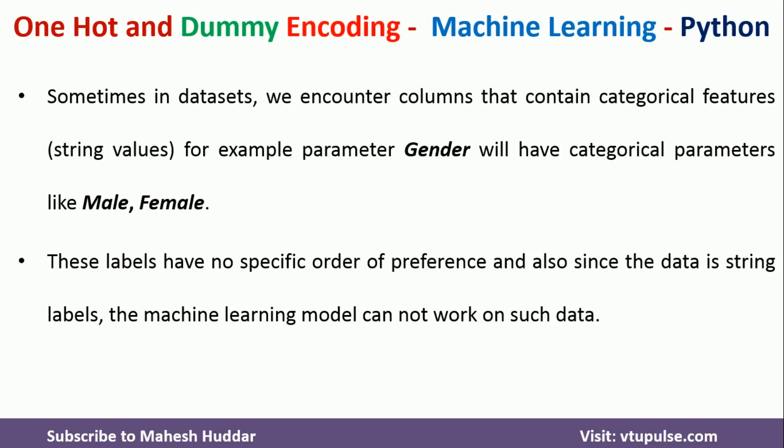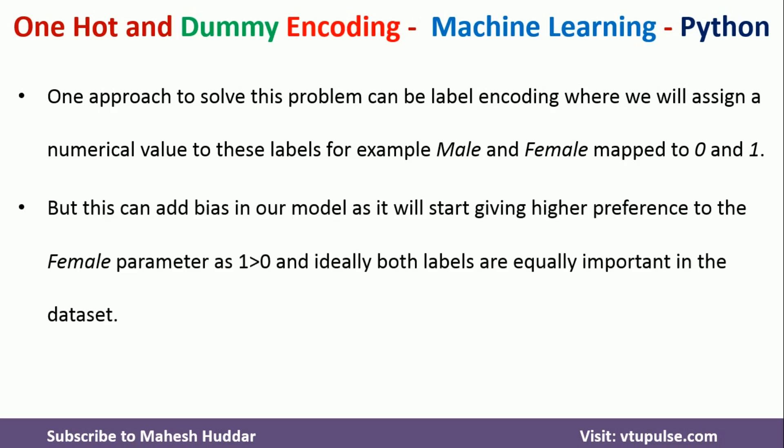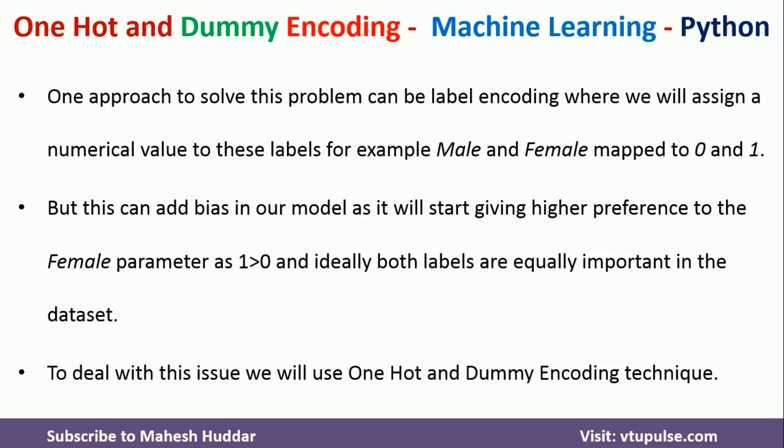So we need to convert this data into numeric values — male should have some numeric value and female should have some numeric value. We can use label encoding, where every string label is mapped to a numeric value starting from 0. So male will have 0 and female will have 1. But the problem is that female will be given more importance because the value 1 is greater than 0.